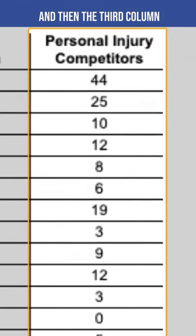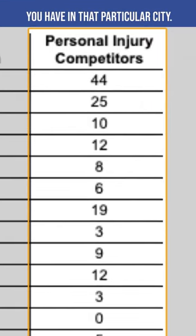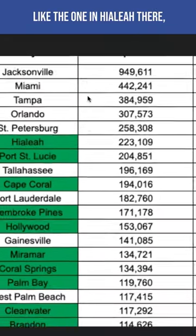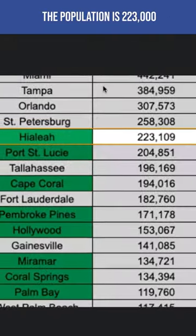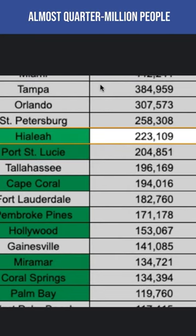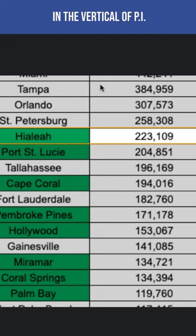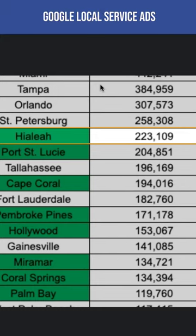The third column is the number of competitors you have in that particular city. This is for PI. You'll notice that Hialeah has a population of 223,000 — almost a quarter million people — and there are no PI attorneys in the PI vertical that have set up Google Local Service Ads in Hialeah.